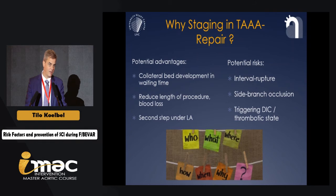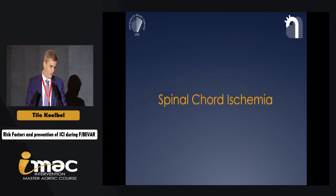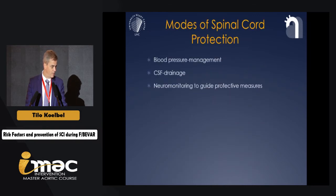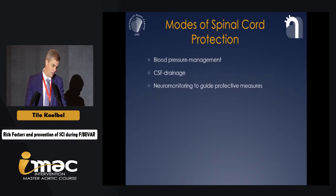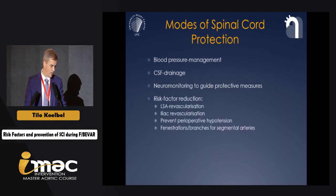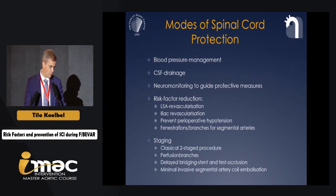There are also risks of staging thoracoabdominal repair: the patient can die in the time in between, there can be side branch occlusion, and other issues. Other methods of spinal cord protection include blood pressure management, spinal cord drainage — which has become standard in most expert centers — and the reduction of risk factors like previous supra-aortic artery occlusion or aortic obstruction.